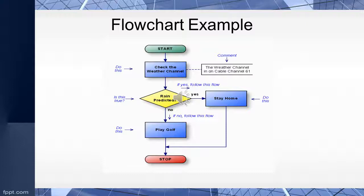The conditional asks, will there be rain? If the answer is yes, the person will stay home. If the answer is no, the person will play golf. The flow chart then ends.